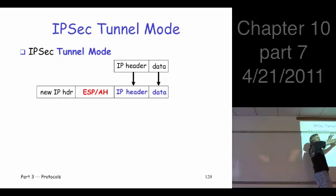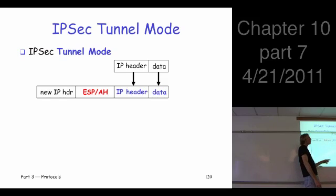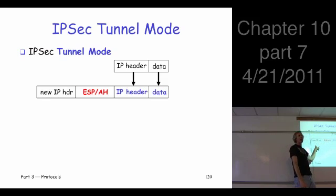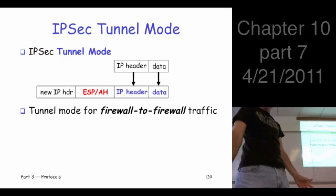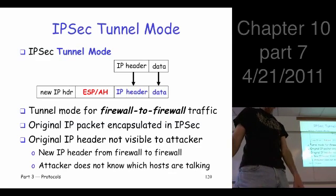In tunnel mode, you take the original packet created by Alice to send to Bob — this is the original packet — it gets to the firewall. The firewall then creates a new packet. This is the data, creates a new header, and puts in that extra header information needed for IPSec. What does this new header say? It's not Alice-to-Bob; it's Alice's firewall to Bob's firewall. So we encapsulate the old data — the whole packet — and send it on its way.